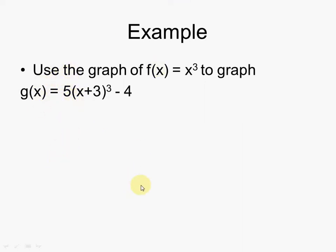So let's do this example. g of x equals 5, and then x plus 3, cubed, minus 4. So let's look at this. We have our little x and y axis.